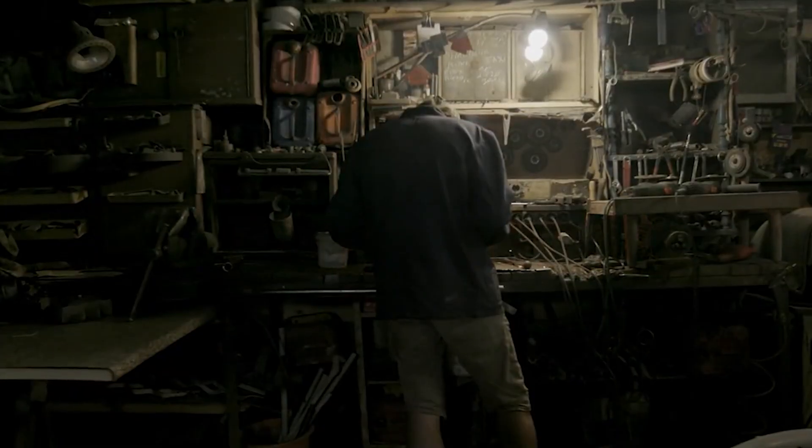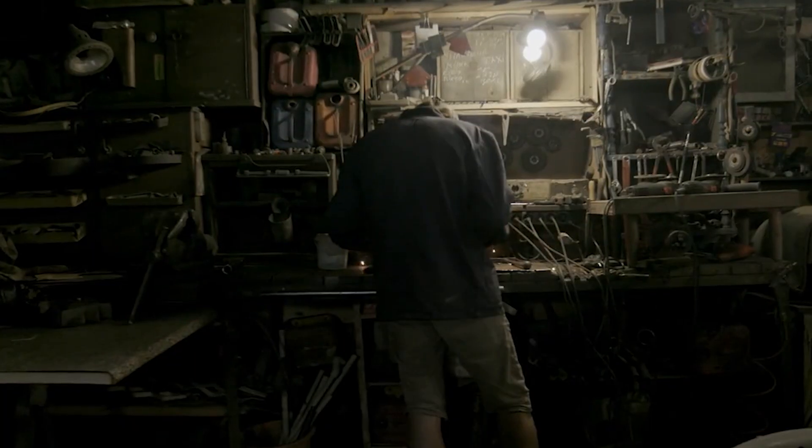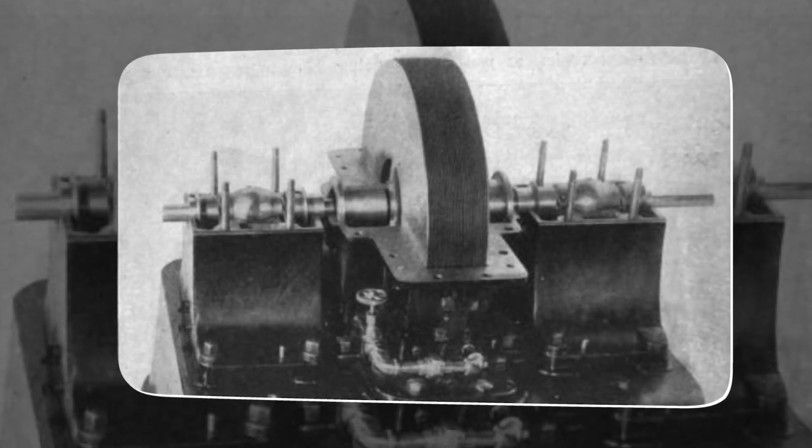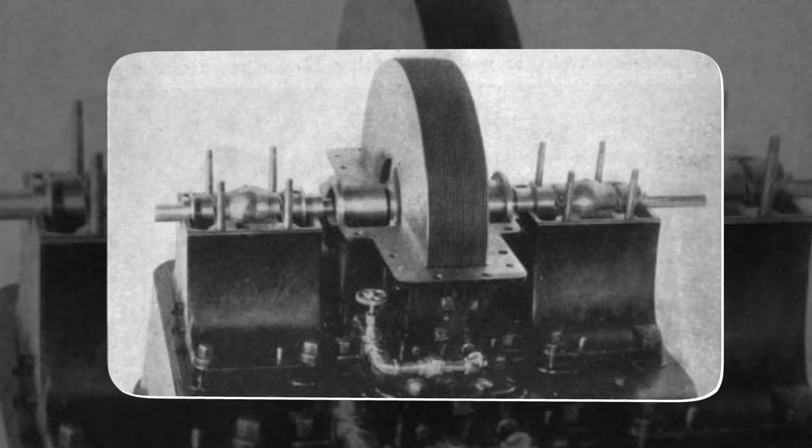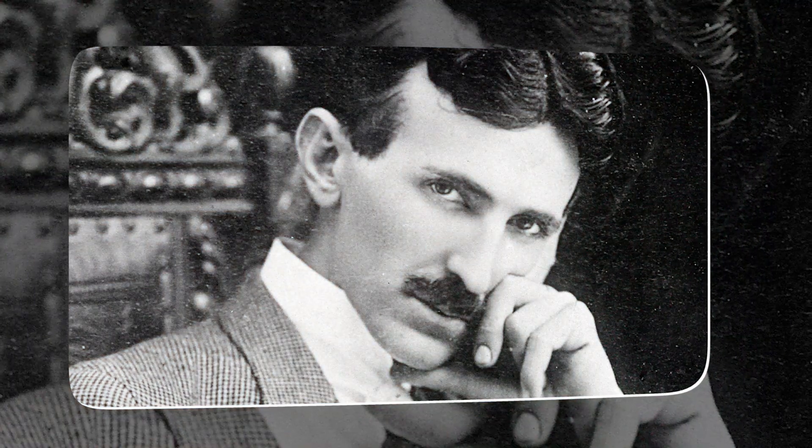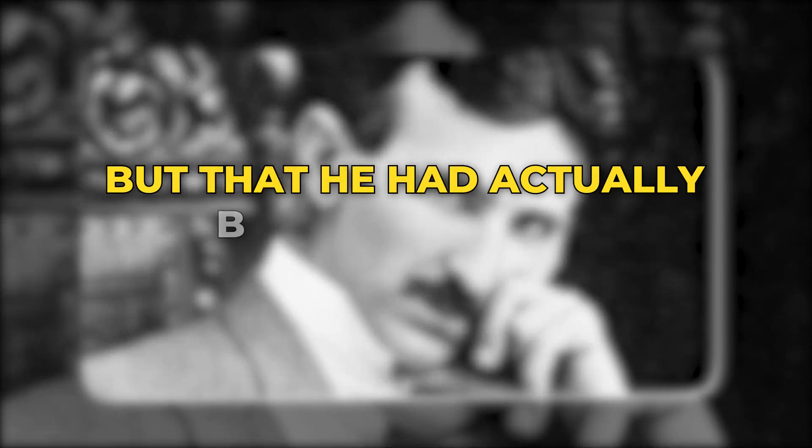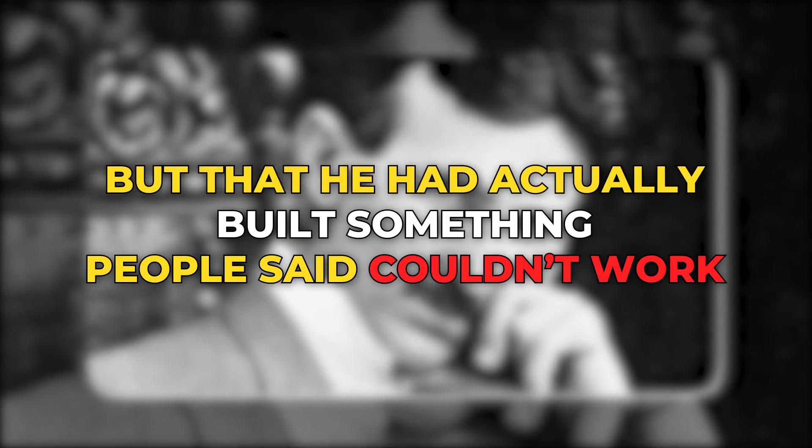In a small workshop filled with wires, metal parts, and the faint hum of machinery, a man named Charlie had an idea. He wasn't just building another engine or a regular piece of technology. He was trying to bring back one of Nikola Tesla's most mysterious inventions. What made Charlie stand out wasn't that he loved Tesla, which he did, but that he had actually built something people said couldn't work.